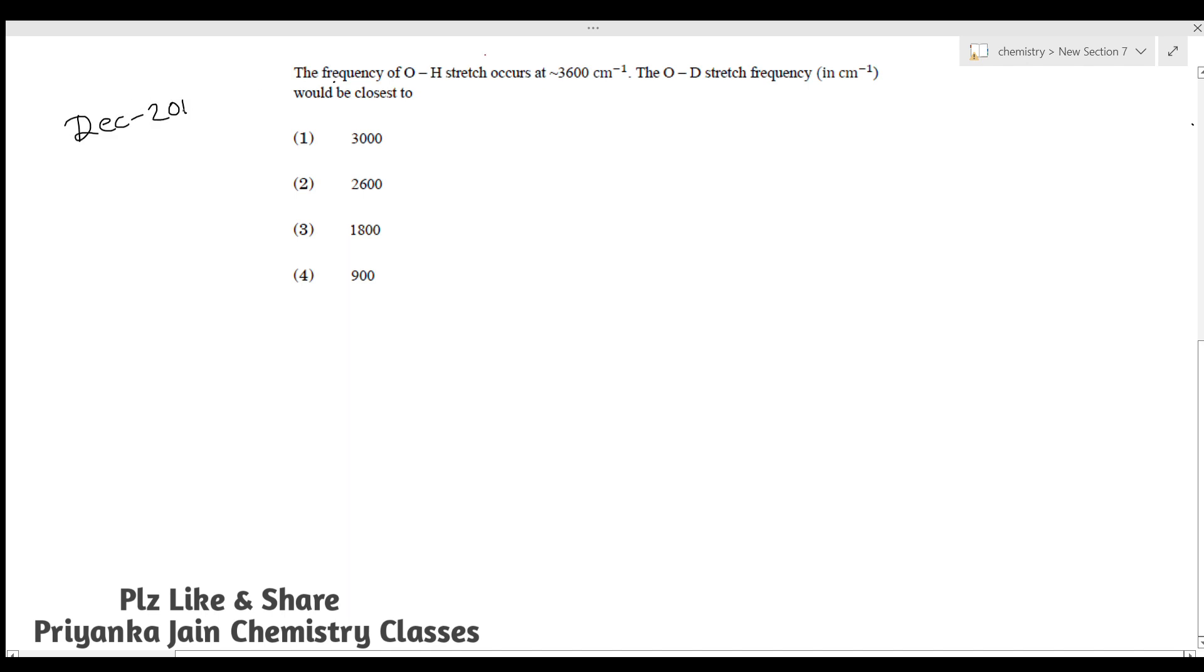The question is based on IR spectroscopy. The frequency of O-H stretching occurs at 3600 cm⁻¹. The O-D stretching frequency (in cm⁻¹) would be closest to... We are given four options. You know that ν = 1/(2π) × √(k/μ), where μ is the reduced mass, given by μ = (m₁ × m₂)/(m₁ + m₂).